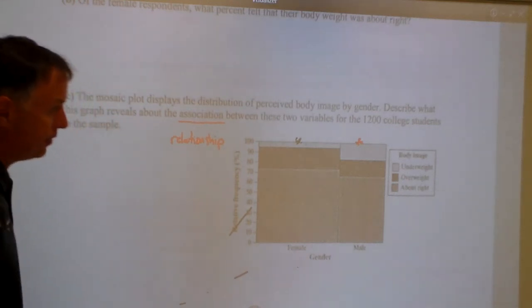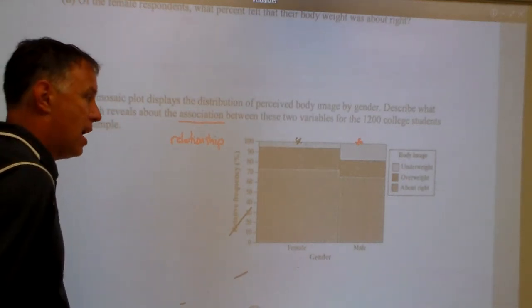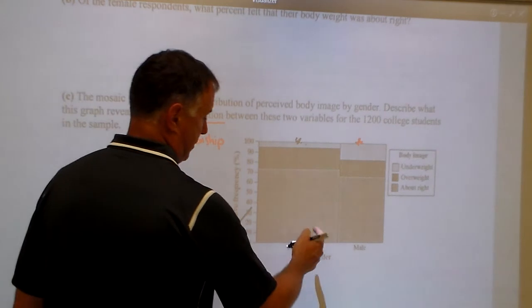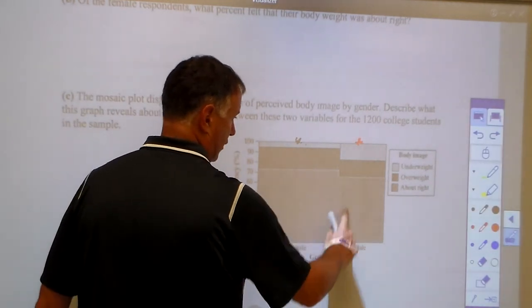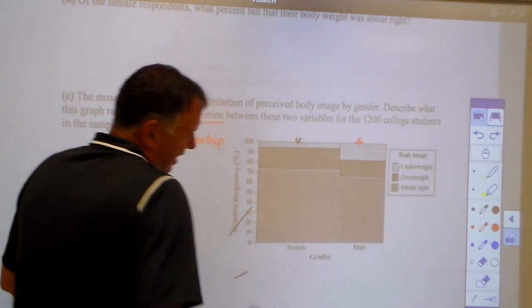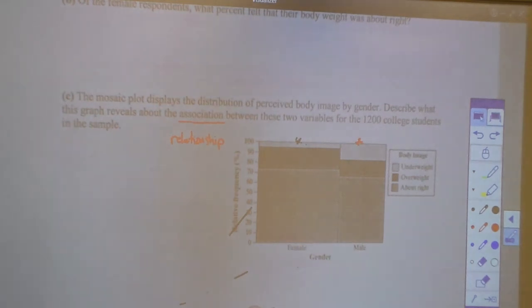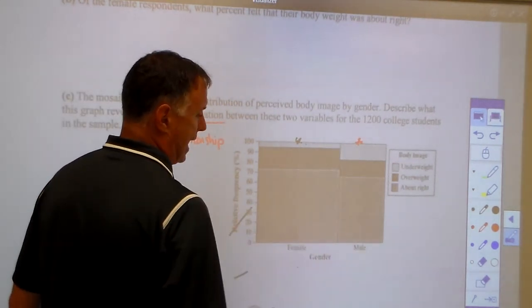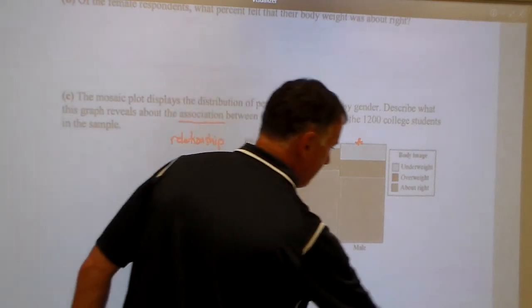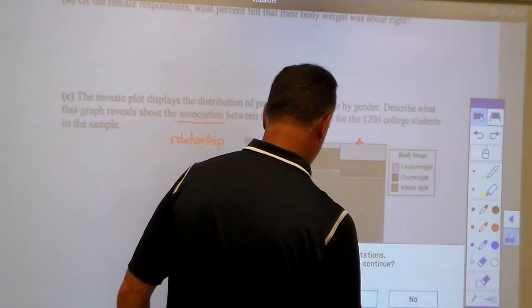So that's the biggest difference. And then the other thing that draws me to this graph is that the percentage of females and the percentage of males who think they're about right are kind of similar. So it's good to talk about similarities and differences when we have these. Okay. All right. Cool.